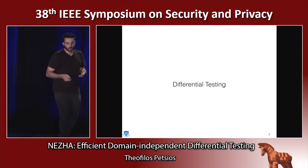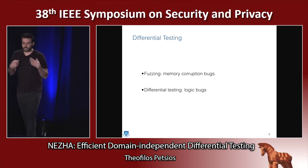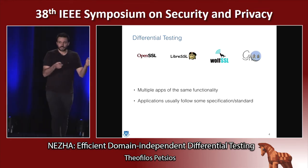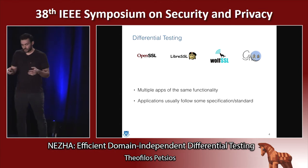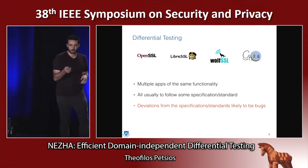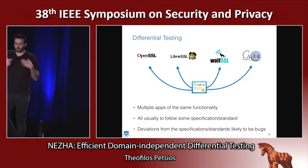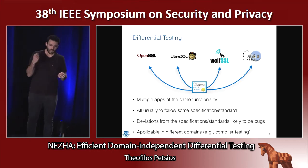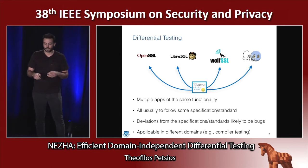Most of the audience must be familiar with differential testing. It's a very well-known testing technique, and essentially with differential testing we're mainly trying to target logic bugs, in a similar way that with fuzzing we target memory corruption bugs. For example, you might have a series of applications that perform the same functionality — suppose you have different SSL libraries. These applications generally conform to the same standard or specification, so the intuition is that if you observe some deviation from the specification, that's likely to be a bug in one of the applications. What we do with differential testing is feed an input to all of these applications and observe the behavior to see if we spot any deviation. This is applicable not only to SSL libraries but also to compiler testing or differentially testing different JVM implementations.